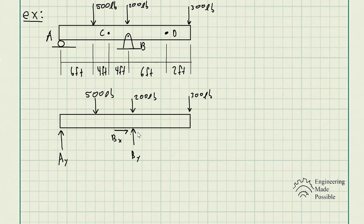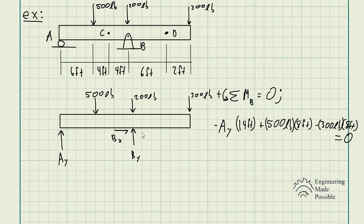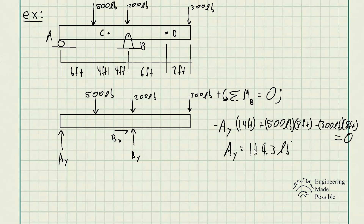Let's apply the sum of moments about point B. For the reaction at point A, we have negative AY times 14 feet — negative because the moment caused with respect to point B is clockwise. Plus the 500-pound external force times its perpendicular distance of 8 feet (positive). The 200 pounds acts directly through point B, so it produces no moment. The 300-pound force is clockwise, so it's negative 300 times 8 feet.